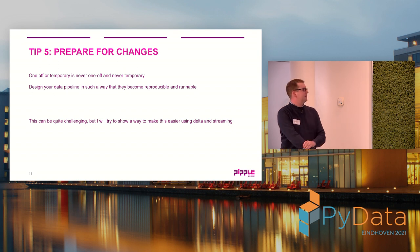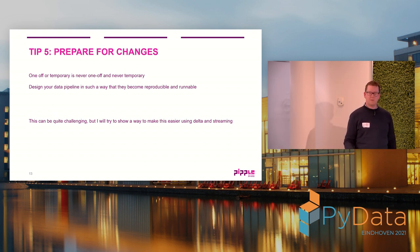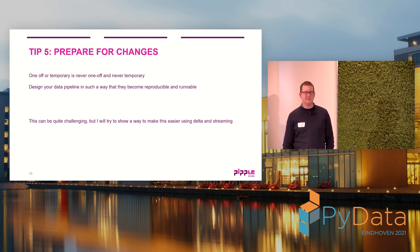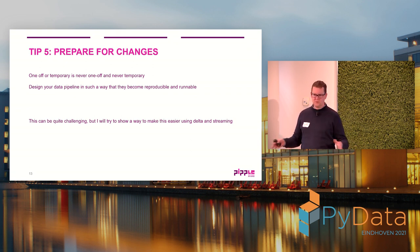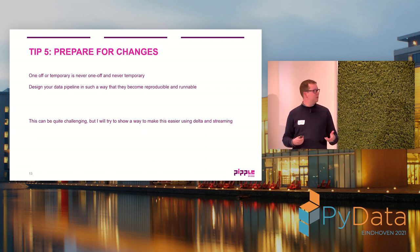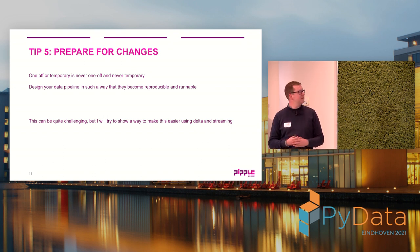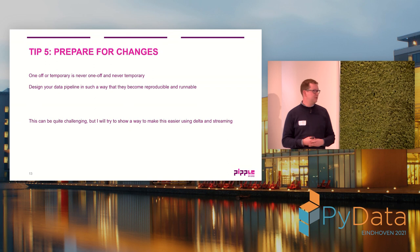Tip five: prepare for changes. I've often started a project that's supposedly one-off or temporary, and it's never one-off and never temporary. With data pipelines, you're going to run them more often, so build them that way. They don't need to be highly complex, but they need to be runnable — meaning you can run the notebook, produce a dataset, rerun it and produce the same dataset, or do nothing if there's no new data. They also need to be reproducible: if you move to a different machine, it should work the same way.